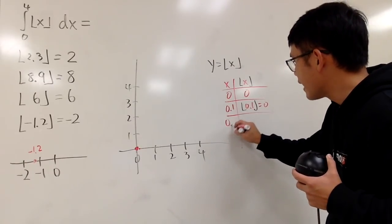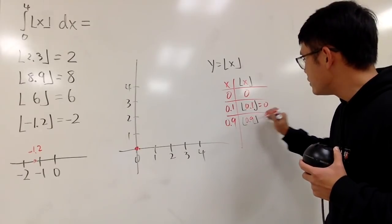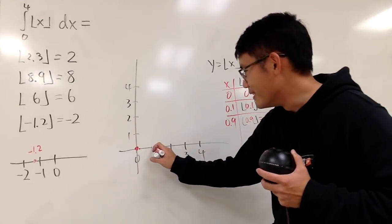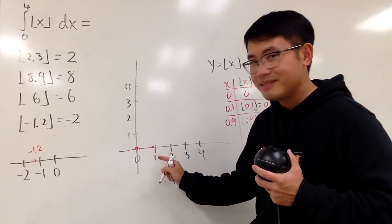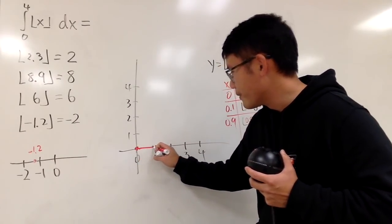The floor of 0.9 is still equal to 0. So when you have 0.99, you still have this. In fact, you have a horizontal little segment right here.